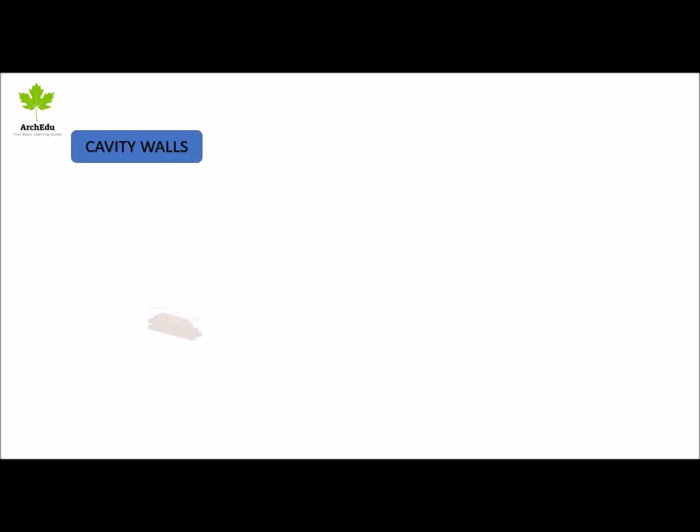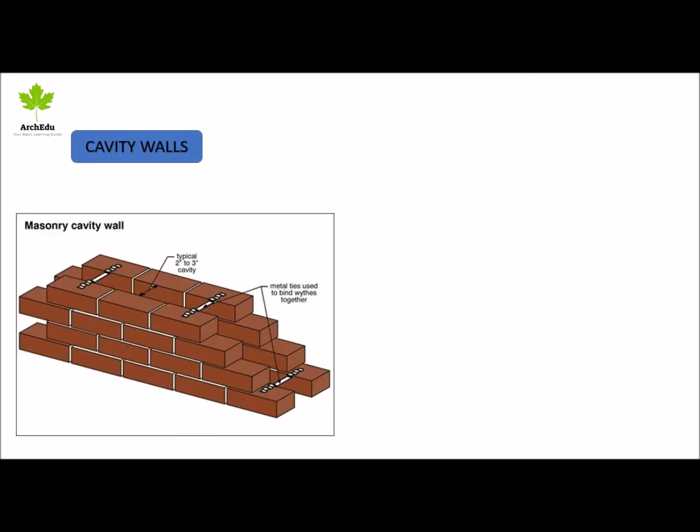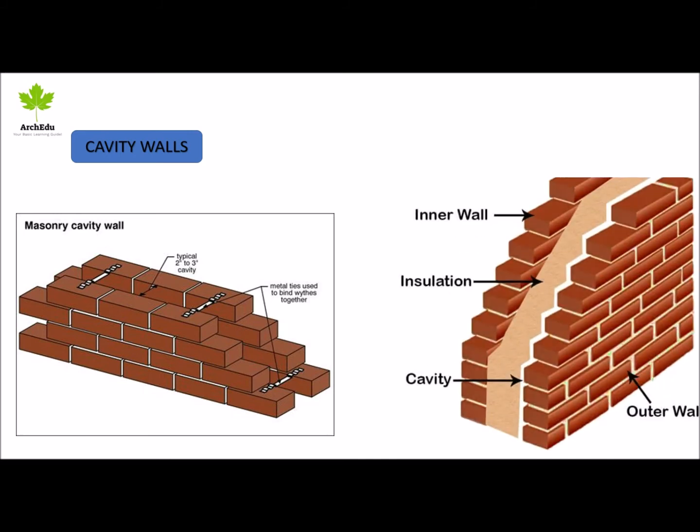Cavity wall: the cavity wall consists of two separate walls made of masonry. Those two walls are known as the internal leaf and external leaf. This wall is also known as a hollow wall.